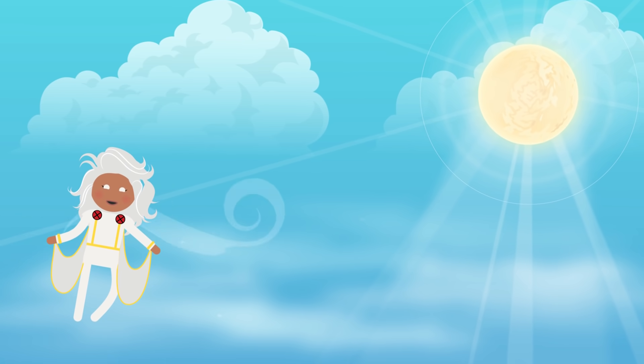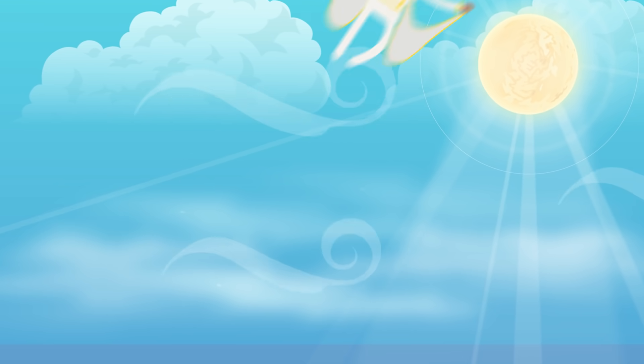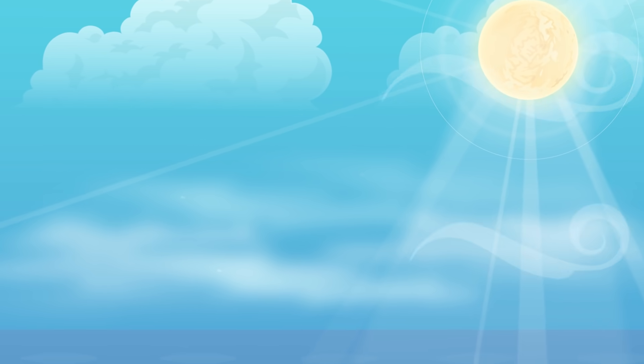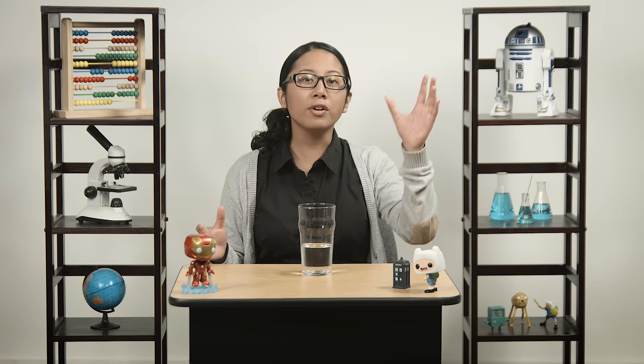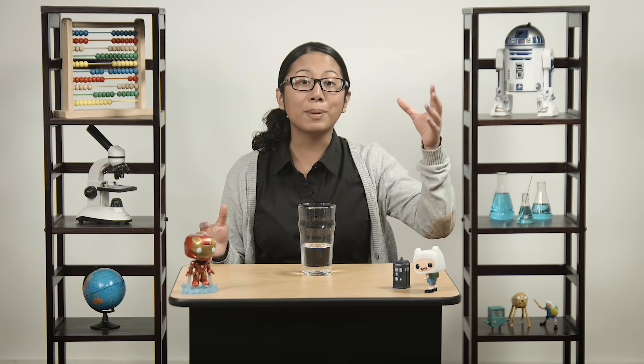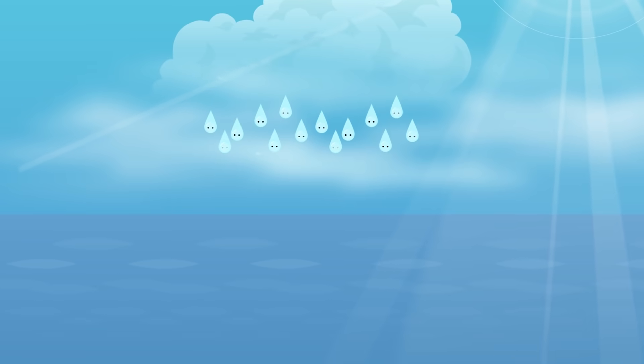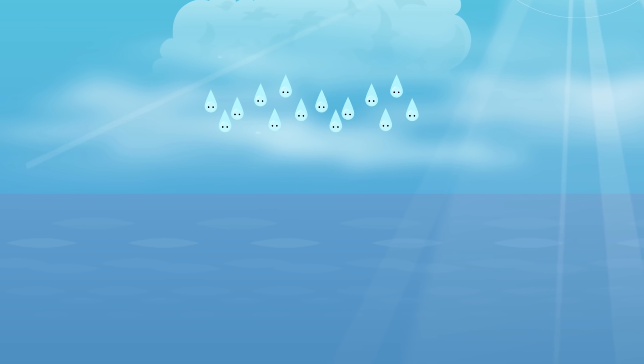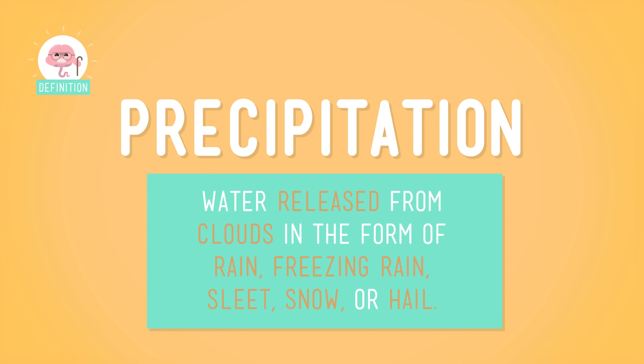And when it's all snuggled up in the clouds, water can do some serious traveling, because wind and other air currents can push clouds over long distances. So the water in the clouds above you may have originally been picked up over a faraway ocean. If enough water particles in a cloud stick together, the water will fall out — and when it does, it's called precipitation.